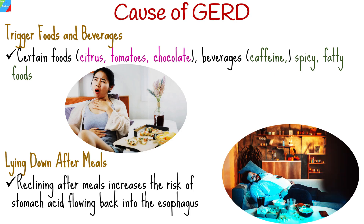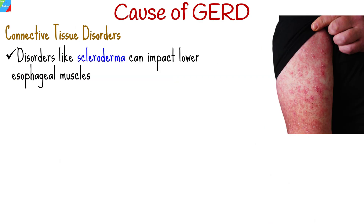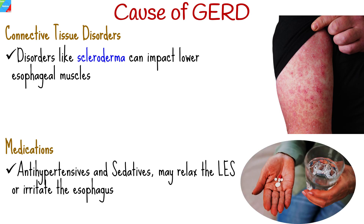Reclining after meals increases the risk of stomach acid flowing back into the esophagus. Connective tissue disorders like scleroderma can impact lower esophageal sphincter muscles, increasing the risk of acid reflux. Some medications, including antihypertensives and sedatives, may relax the lower esophageal sphincter or irritate the esophagus, contributing to GERD.